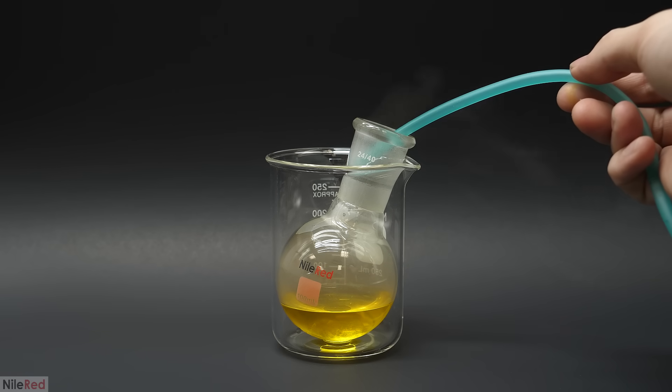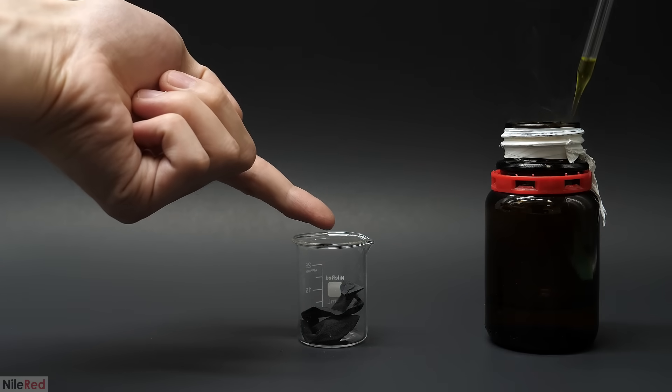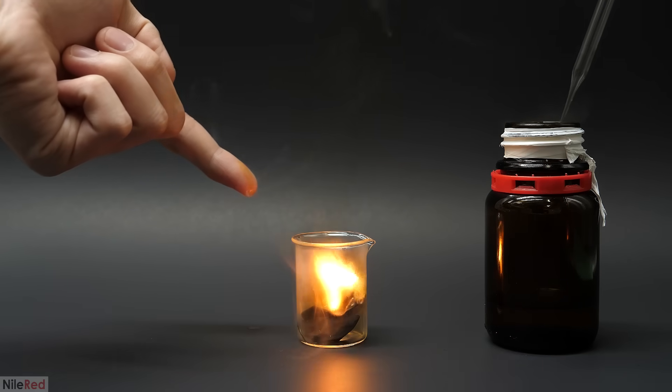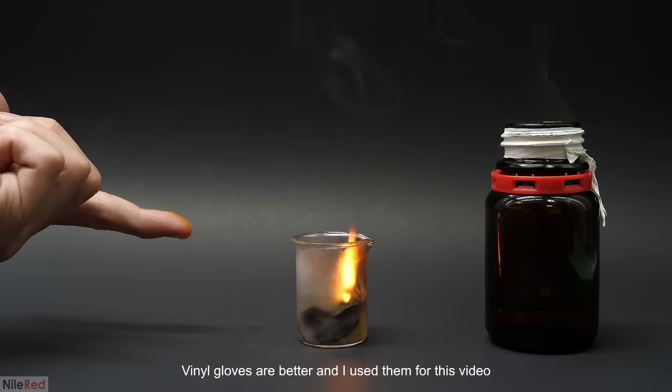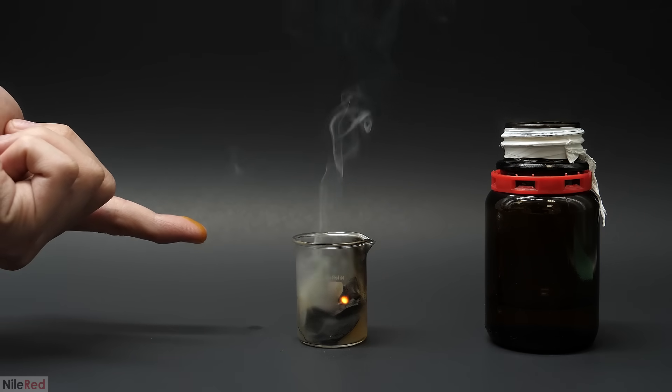A few months ago, I made some super concentrated nitric acid, which was close to 100%. My main purpose with that video was to explore some of its different properties, and of course, to also show that it could light common lab gloves on fire. So when working with it, you either need to use a different type of glove that's chemically resistant, or to just wear none at all.